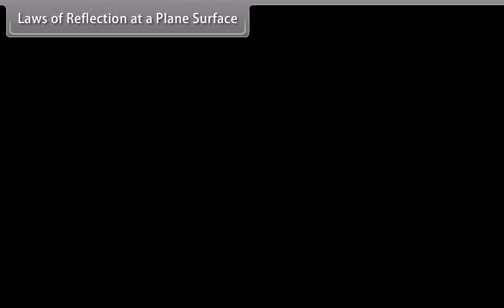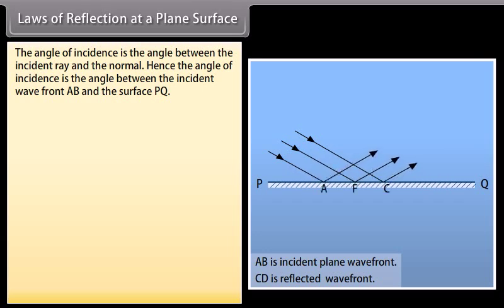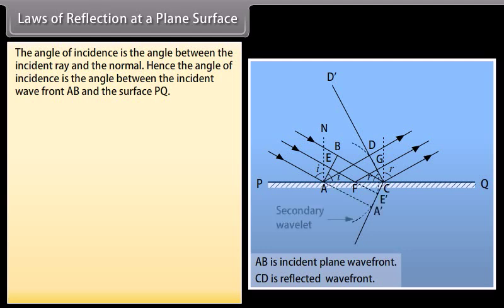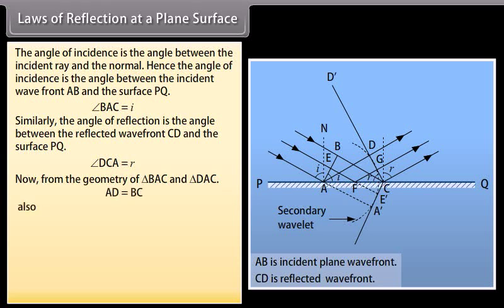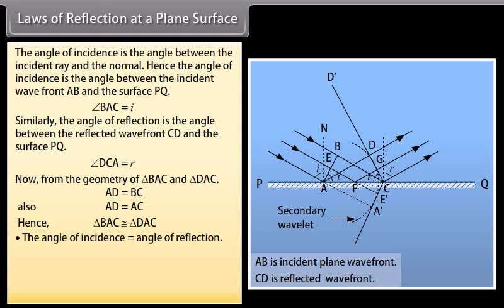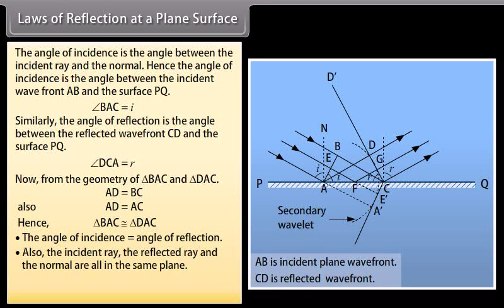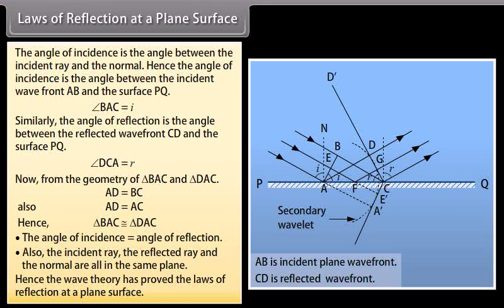Laws of reflection at a plane surface: the angle of incidence is the angle between the incident ray and the normal. The ray is perpendicular to the wave front and the normal is perpendicular to the surface. Hence, the angle of incidence is the angle between the incident wave front AB and the surface PQ. Similarly, the angle of reflection is the angle between the reflected wave front CD and the surface PQ. From the geometry of triangles BAC and DAC, AD equals BC and AD equals AC — these are congruent triangles. Hence, the angle of incidence equals the angle of reflection. Also, the incident ray, the reflected ray, and the normal are all in the same plane. Thus, the wave theory has proved the laws of reflection at a plane surface.